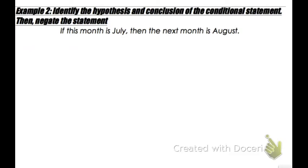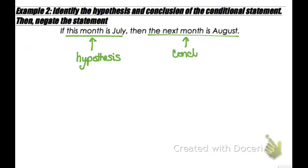Example two: identify the hypothesis and conclusion of the statement, then negate it. The hypothesis is 'this month is July' and the conclusion is 'the next month is August.' To negate means to take the opposite of the statement.